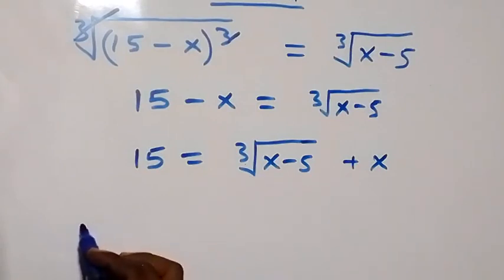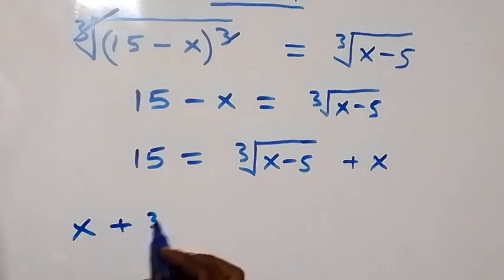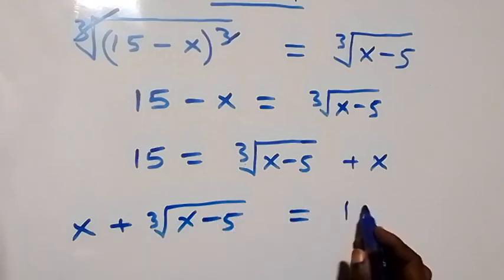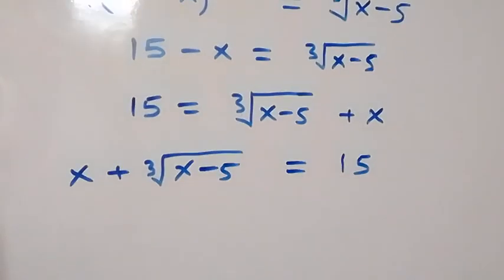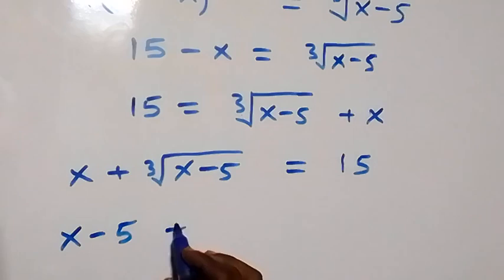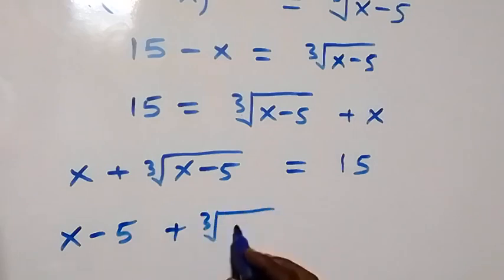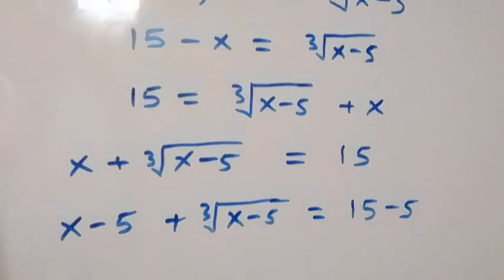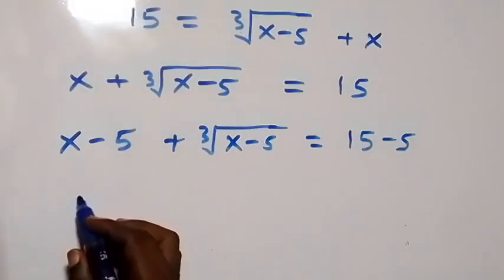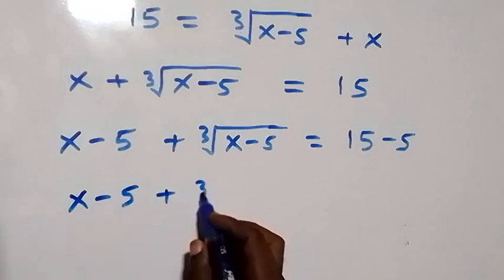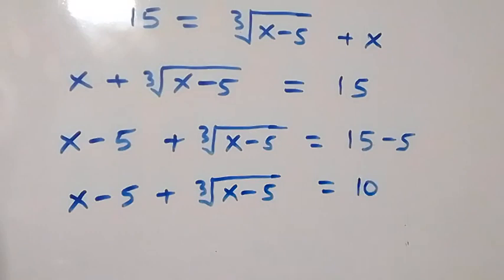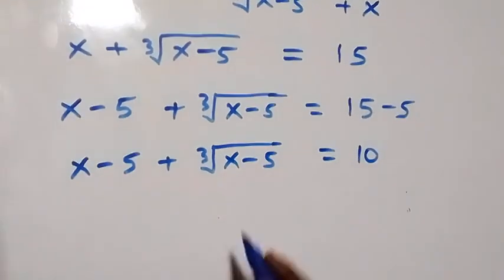Rearranging, we have x plus the cube root of x minus 5, equals 15. Next, let's subtract 5 from both sides. We get x minus 5, plus the cube root of x minus 5, equals 15 minus 5, which gives us x minus 5 plus the cube root of x minus 5 equals 10.